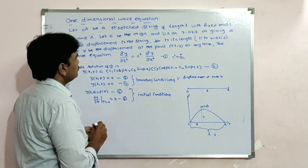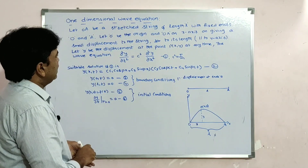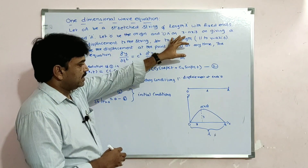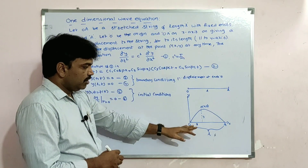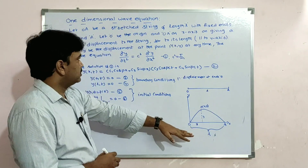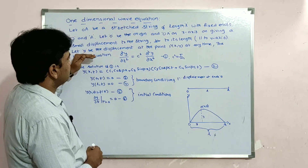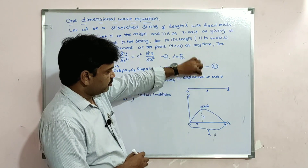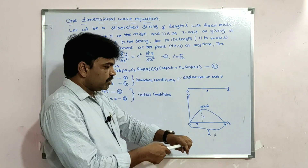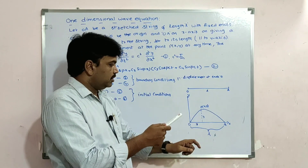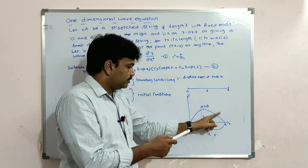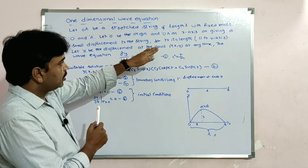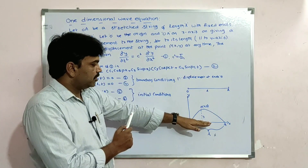Let O be the origin and OA be the x-axis. Initially the string is at rest, and we give it a small displacement — a small jerk — perpendicular to its length.